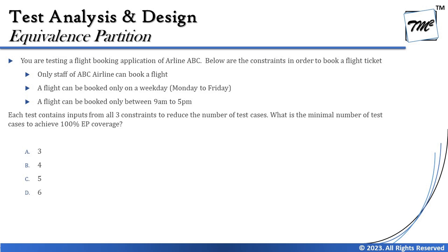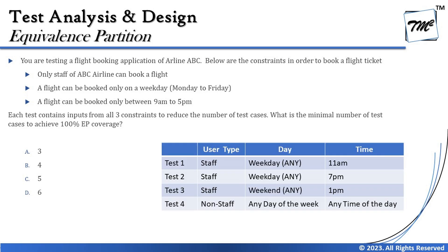The question asks: each test contains input from all three constraints. What is the minimum number of test cases to achieve 100% equivalence partition coverage? Let's bring the table on screen to work through it.